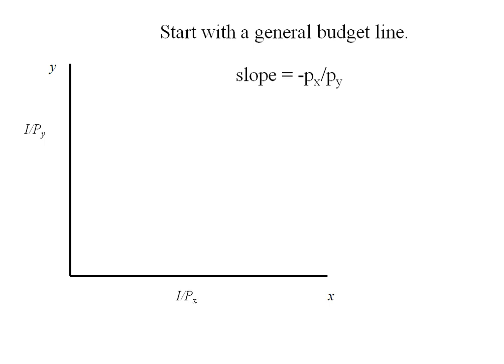The slope of any budget line is going to be the negative of the price of X divided by the price of Y. So I'm going to connect my points and I'm going to label it BL1 for budget line 1.